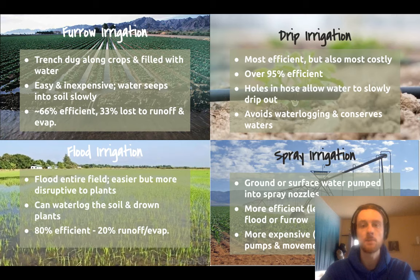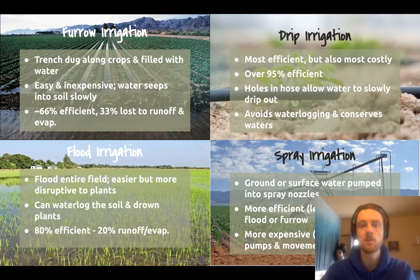The next type of irrigation is spray irrigation. This is far more efficient, so you're going to lose a lot less water to evaporation or to runoff. But it's a lot more expensive because you need to purchase the equipment — this large spraying device — and you also need to spend money on energy to pump water, usually from the ground up into the sprinkler or from nearby surface water. So it's quite a bit more expensive.